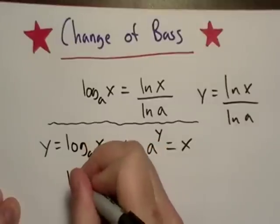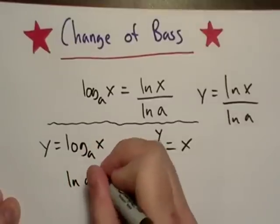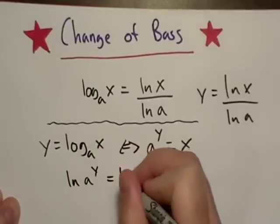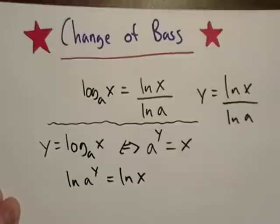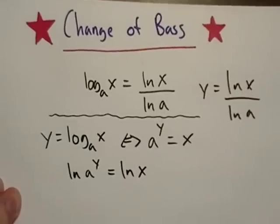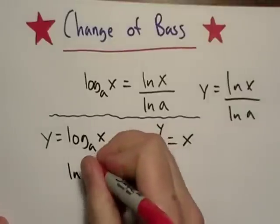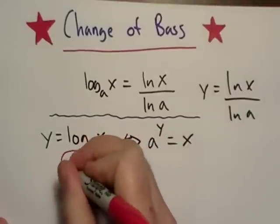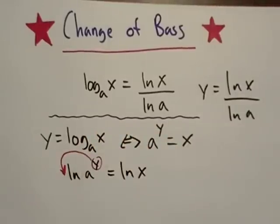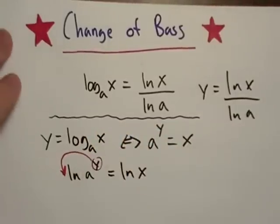So let's take the natural log of both sides. So I took the natural log of both sides and now I'm going to go back to that logarithm power rule, where I just take the power on the item I'm taking the log of and just stick it out in front.